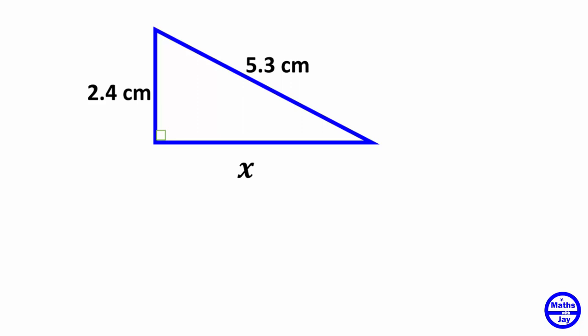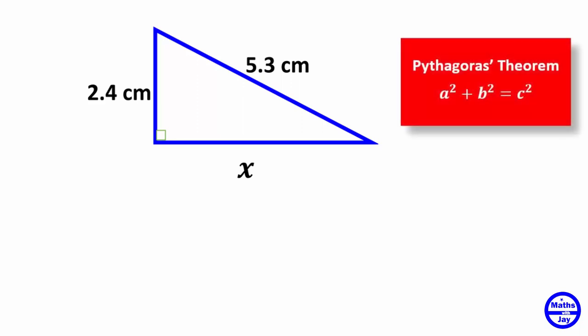So that means when we use Pythagoras theorem we've got to be subtracting rather than adding. Let's see how this will work out. So the longest side is 5.3, so that's going to be c. C is always the hypotenuse.